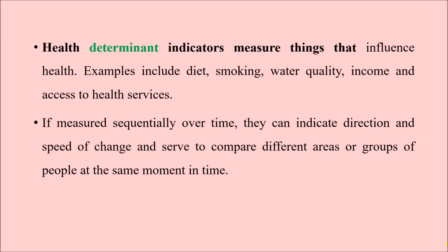If measured sequentially over a period of time, indicators can indicate the direction as well as the speed of change — that is, whether the health status of people in a community is getting better or worse, and whether different risk factors and determinants are increasing or decreasing. This ultimately helps us understand which direction we are going and enables comparison between different groups of people or people living in different geographical areas over time.